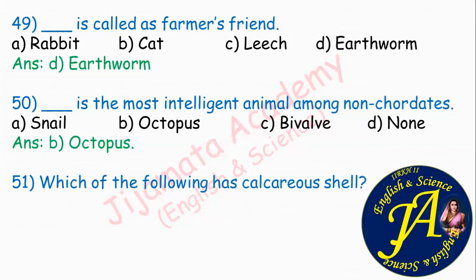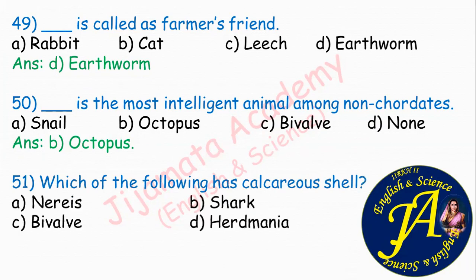Which of the following has calcareous shell? Options are Nereis, shark, by-valve, Hermania. Calcareous shell is a property of mollusca — those with a soft, slimy body have a calcareous shell for protection. Example is by-valve. Therefore, option C: by-valve is correct.